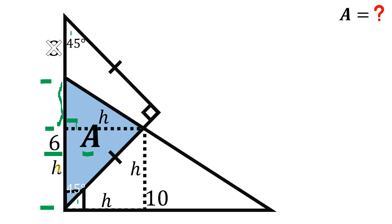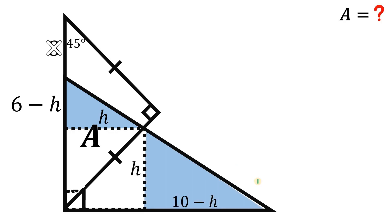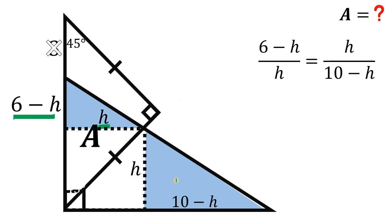We know this segment measures 6 units and this segment is h, so the remaining segment is simply 6 minus h. Similarly, the base is 10 units and this length is h, so the remaining length is 10 minus h. Now let's focus on this right triangle — we see another right triangle that is similar to it. Since they are similar, we'll use the concept of similarity to find h.